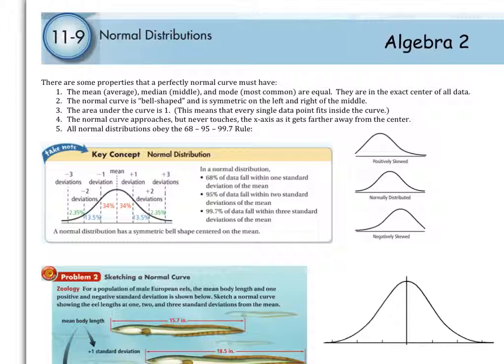And then all normal distributions obey the 68, 95, 99.7 rule.